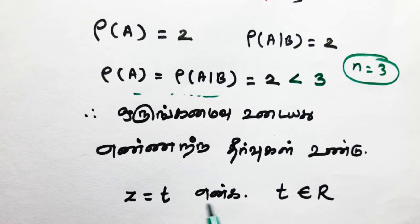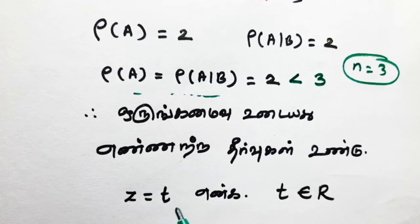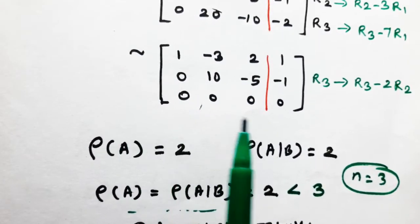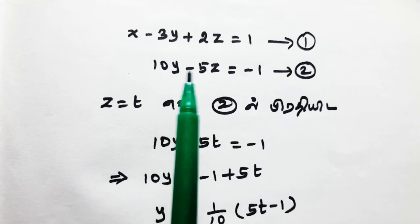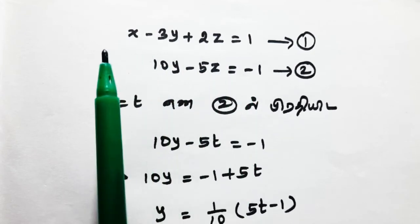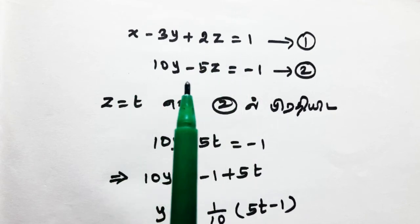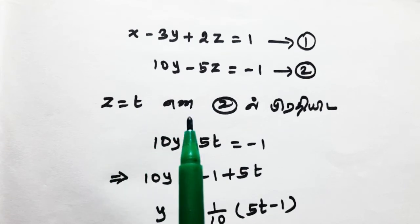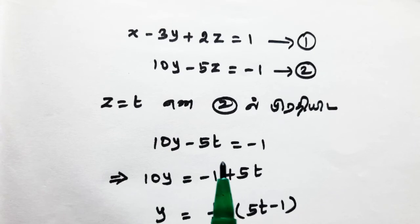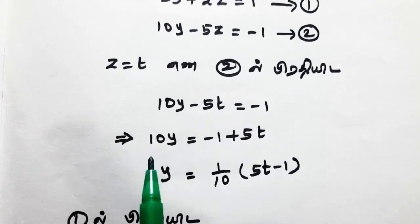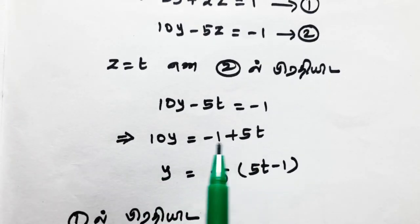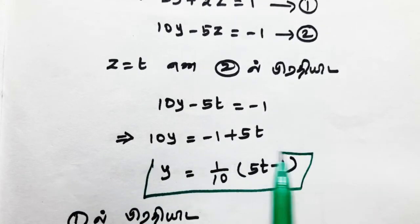From the last equivalent matrix, the two equations are: first, x - 3y + 2z = 1; second, 10y - 5z = -1. Setting Z equal to T in the second equation: 10y - 5T = -1, so 10y = -1 + 5T. Therefore Y equals (1/10)(5T - 1).